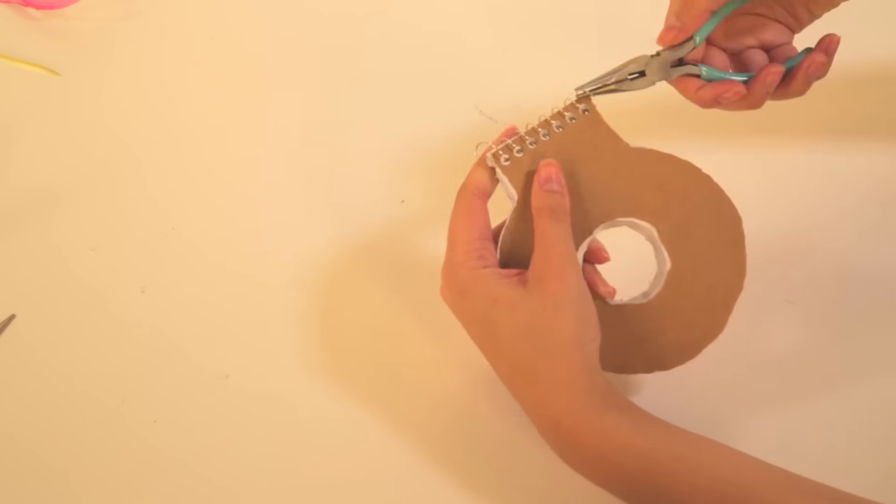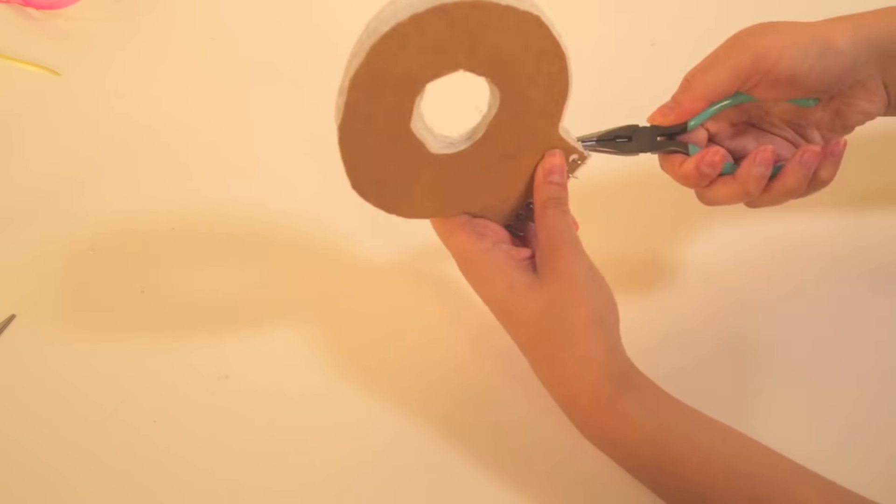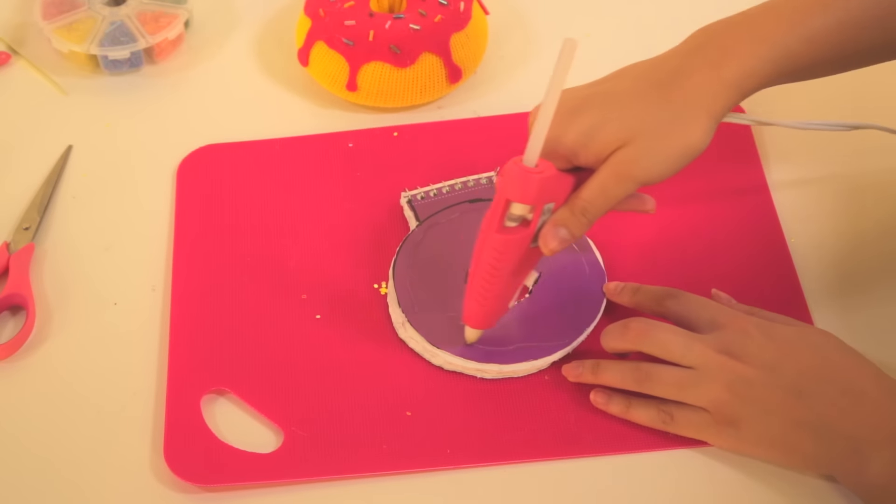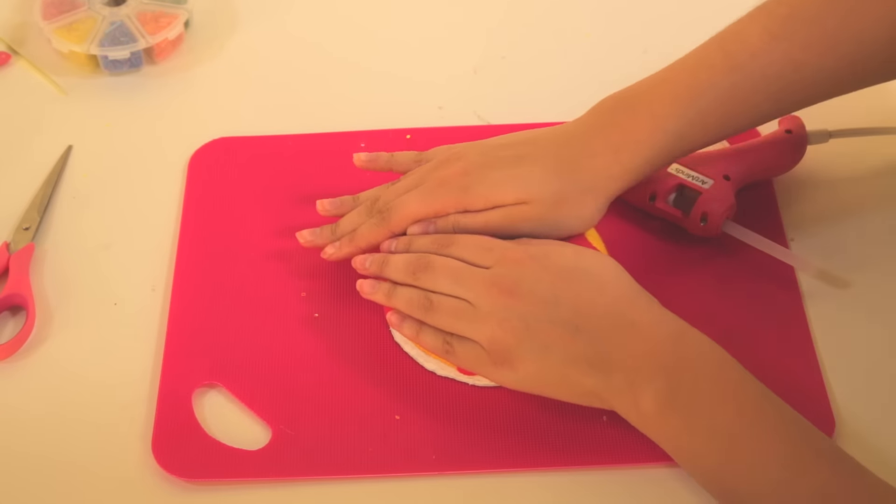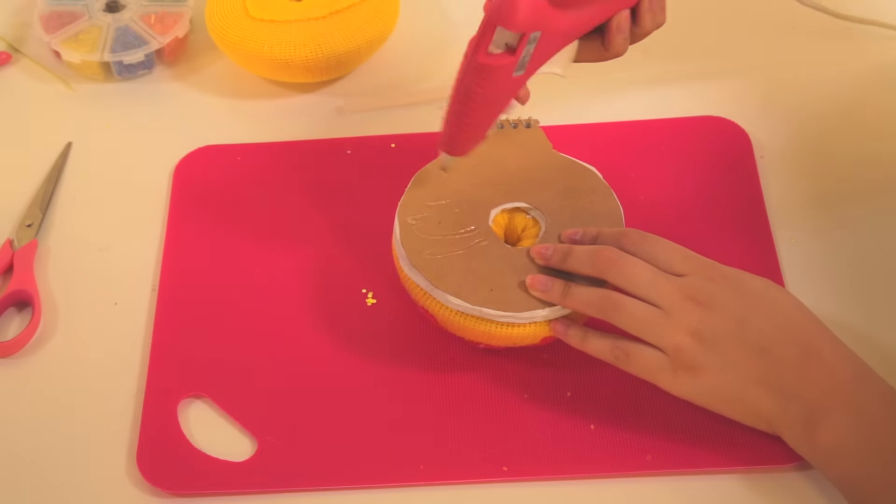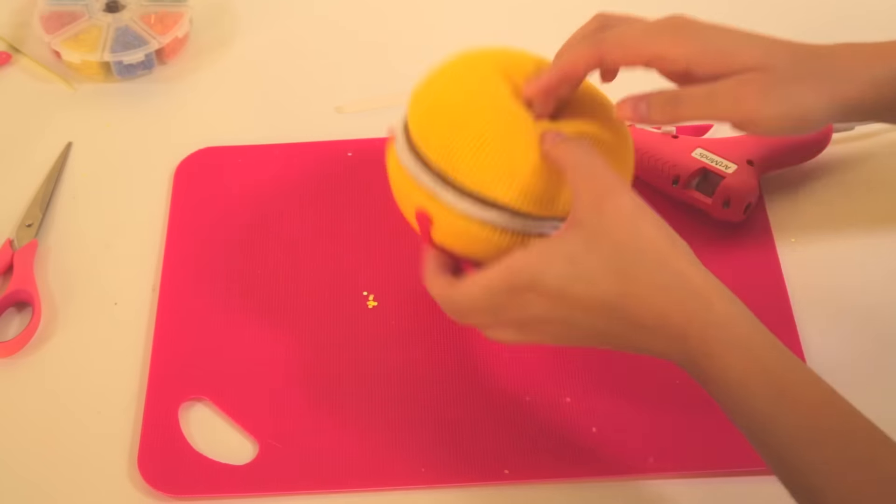Now use your wire cutters to fold in the excess wire. Hot glue your donut halves to the notebook covers. The icing side on the top of your notebook. And the plain sides to the bottom. Now let that dry.